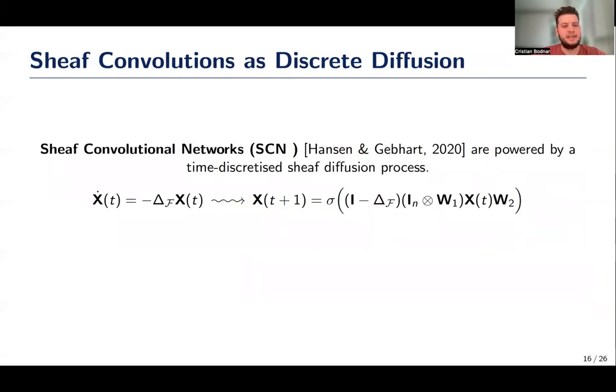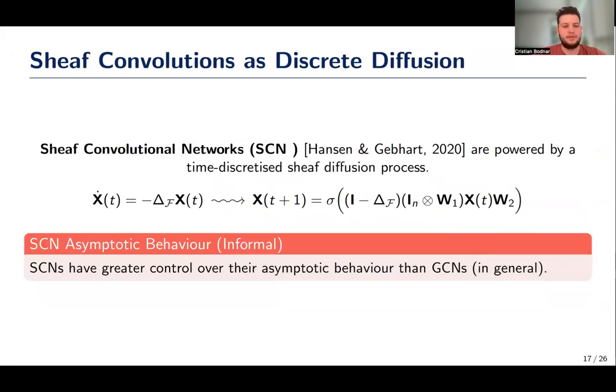Similarly to how GCN is built from a heat diffusion process, we can follow a similar recipe to obtain sheaf convolutional networks, a model originally proposed by Hansen and Gebhardt. In our work, we proved that sheaf convolutional networks have greater control over their asymptotic behavior than GCNs.